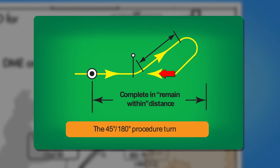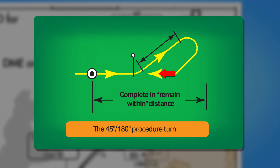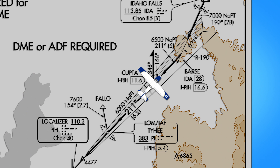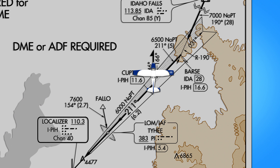Looking back at the locator outer marker in our example, we would fly a 031-degree heading along the localizer and then initiate a procedure turn by first turning left to a heading of 346 degrees after passing Kupta. After one minute, we'll turn right to a heading of 166 degrees. We'll fly this heading and then re-intercept the localizer inbound on a course of 211 degrees.